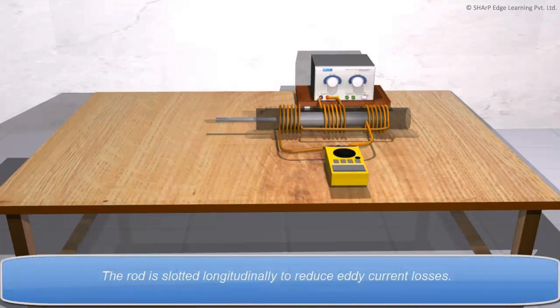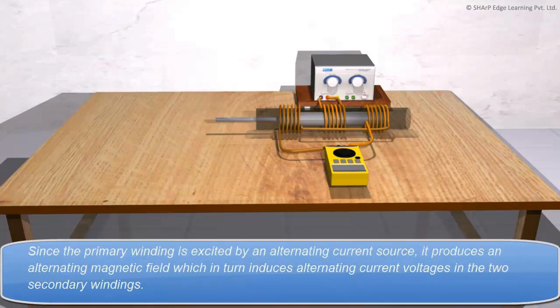The rod is slotted longitudinally to reduce eddy current losses. Since the primary winding is excited by an alternating current source, it produces an alternating magnetic field which in turn induces alternating current voltages in the two secondary windings.